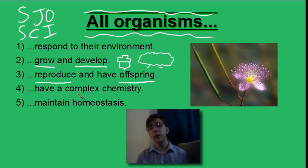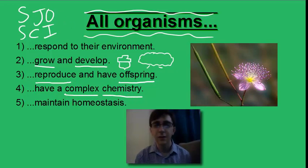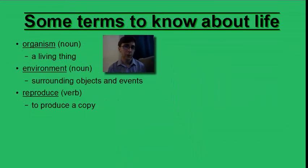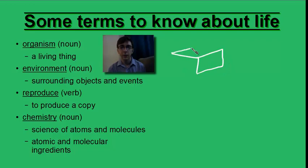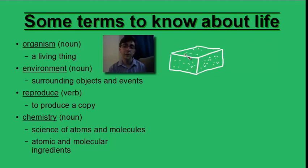This time we'll talk about how all organisms have a complex chemistry. We should probably add some terms to our term list throughout this video. Chemistry is the science of atoms and molecules. Atoms and molecules are some of the tiniest bits of matter. If you take a look at any ordinary everyday object and could look at it very, very closely, you would find that it's made of many, many small pieces — bits so small that you can't see them with your eyes. We call these atoms and molecules.